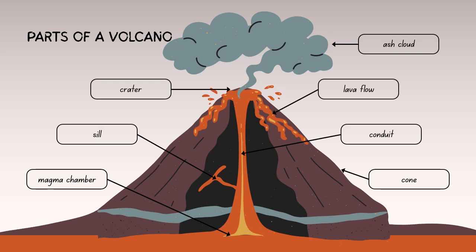A sill is a type of intrusive igneous rock formation that occurs when magma is injected into the cracks or layers of pre-existing rocks and solidifies underground. Sills are horizontal or near-horizontal bodies of rock, as you can see in the diagram depiction.